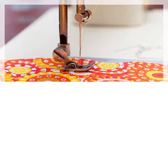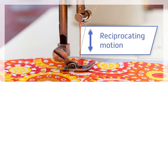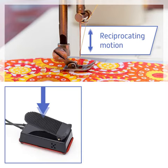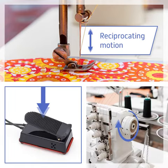Another example of a mechanical device changing one type of motion to another is a sewing machine. The needle uses reciprocating motion as it moves up and down. To create this movement a pedal is pressed and the internal mechanisms of the machine transform rotary motion into the reciprocating motion of the needle.